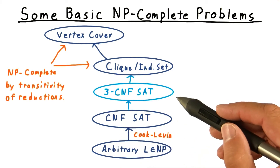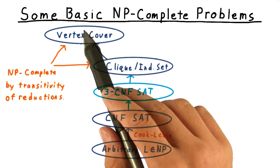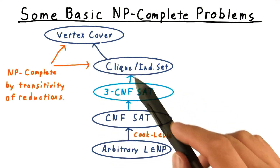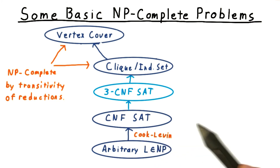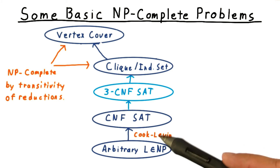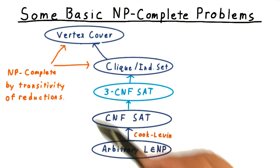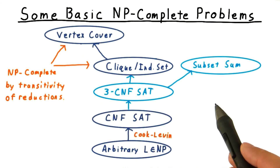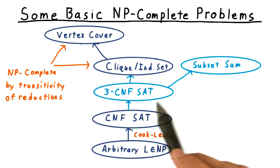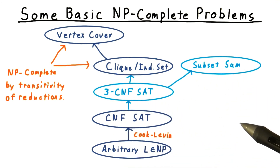Then we're going to reduce 3CNF to independent set, and by transitivity, this will show that this whole chain here is NP-complete. Note that this is very convenient, because it would have been pretty messy to try to reduce every problem in NP to these problems directly. Finally, we will reduce 3CNFSat to the subset sum problem, to give you a fuller sense of the types of arguments that go into reductions.